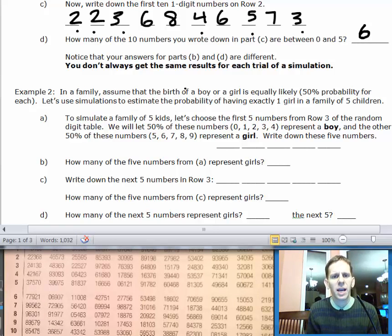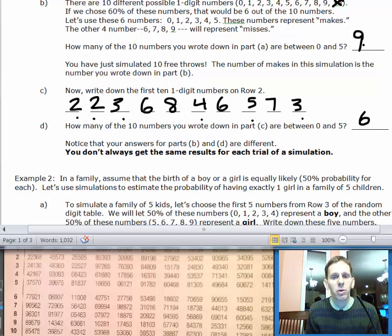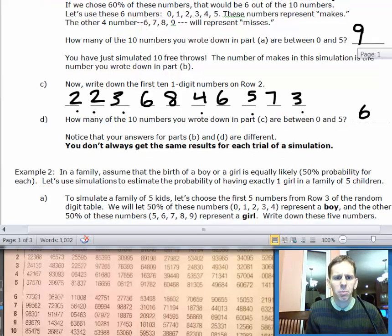What's interesting is that when we did part B, we got 9. In one simulation, we made 9 free throws. In the other simulation, we made 6. You don't always get the same results for each trial of a simulation.